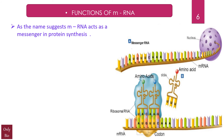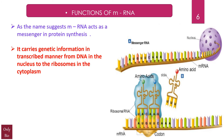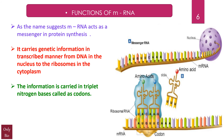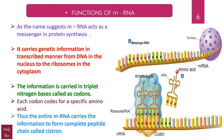As the name suggests, mRNA acts as a messenger in protein synthesis. On the screen you can see a good picture depicting the role of mRNA — it carries the genetic information in the transcribed manner from DNA in the nucleus to the ribosomes in the cytoplasm. The information is carried in triplet nitrogen bases called codons. A group of three nitrogen bases is called a codon. There are 64 codons in totality, and each codon codes for a specific amino acid, except the nonsense codons.